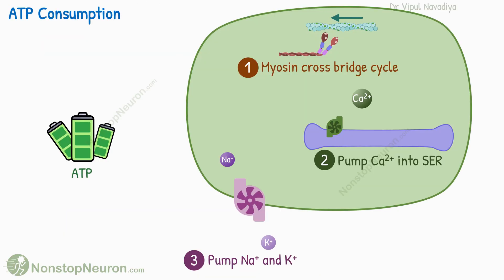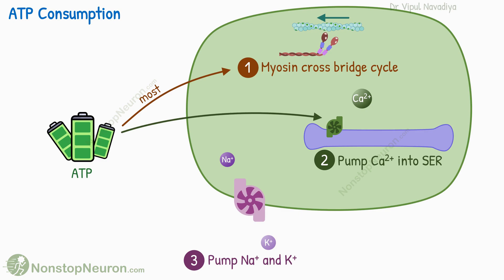First, let's see where the ATPs are consumed. Most of the ATPs are consumed in the myosin crossbridge cycle, during which the actin filaments are pulled over myosin filaments. Apart from that, some ATPs are consumed in pumping calcium into the sarcoplasmic reticulum after contraction is over, and some are used by the sodium-potassium ATPase pump to restore the ionic balance after an action potential, similar to other cells in the body.